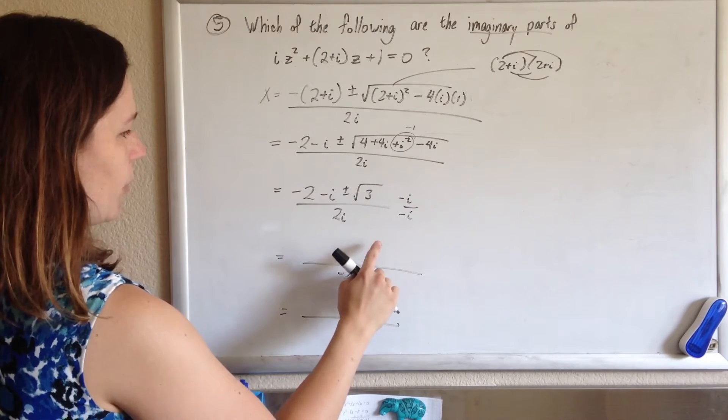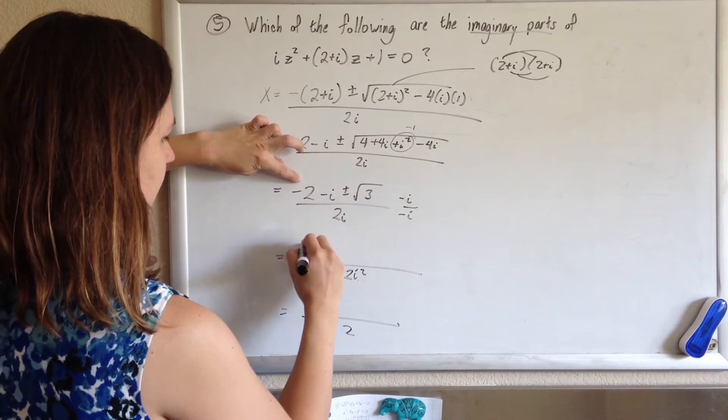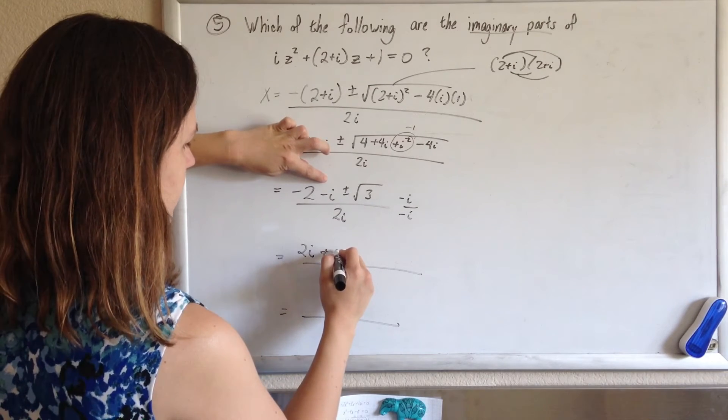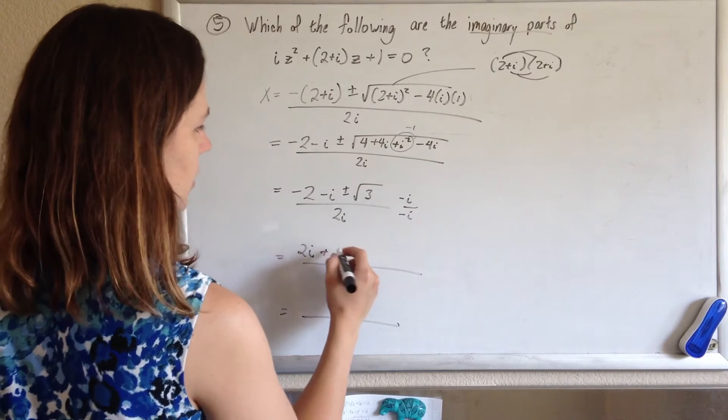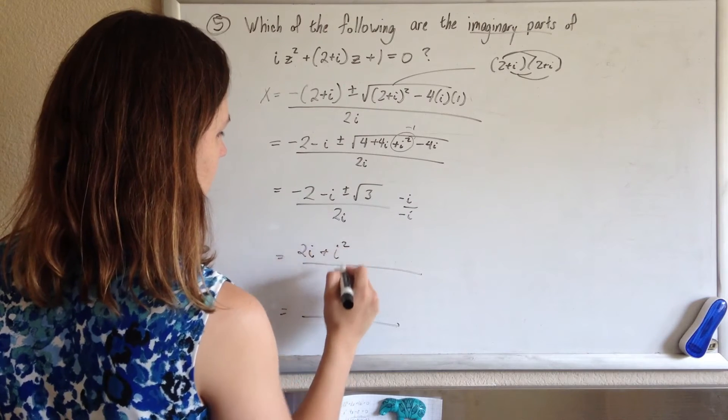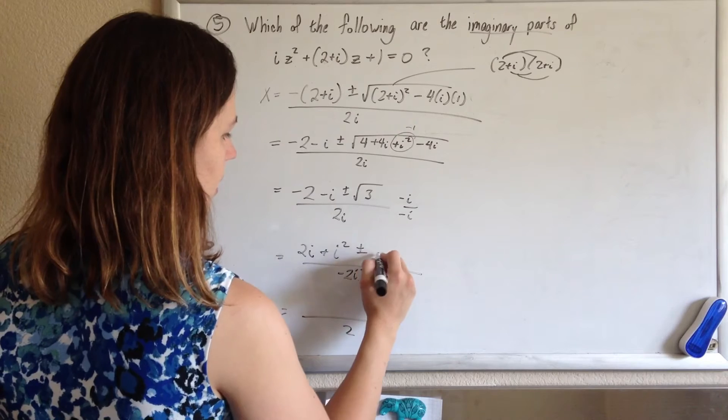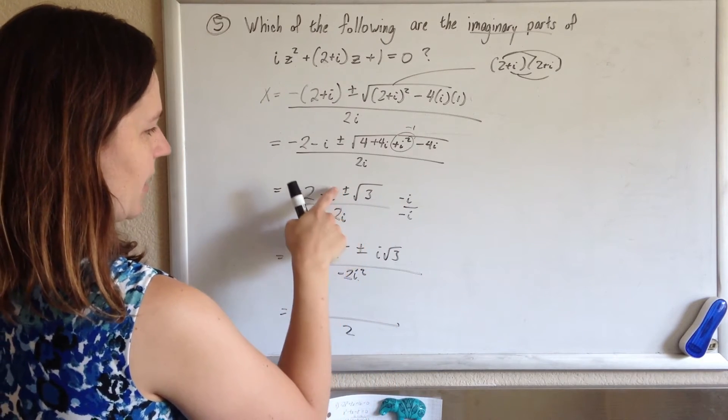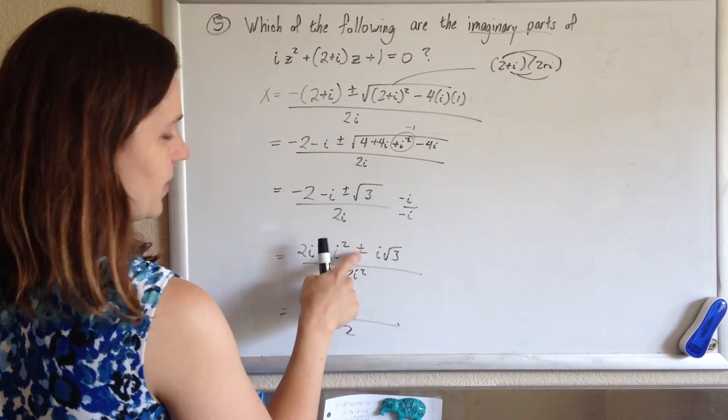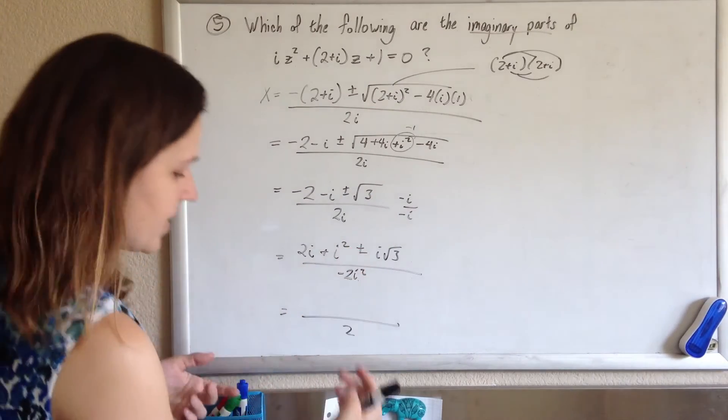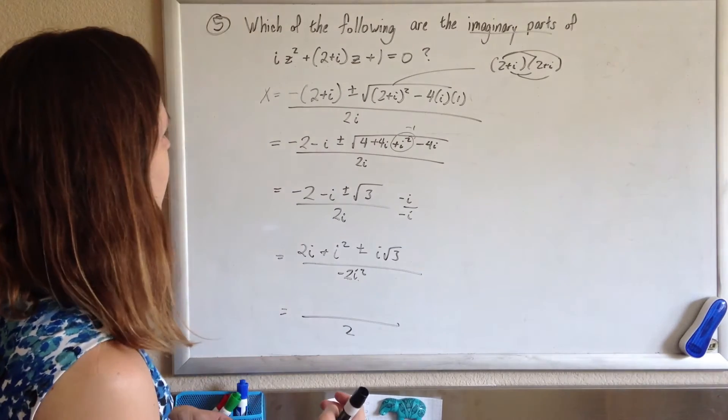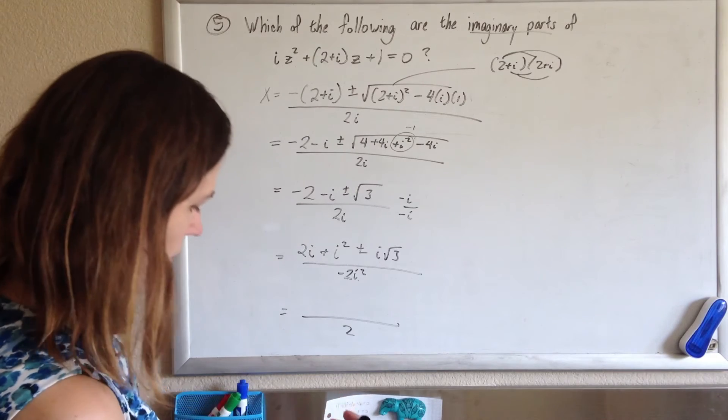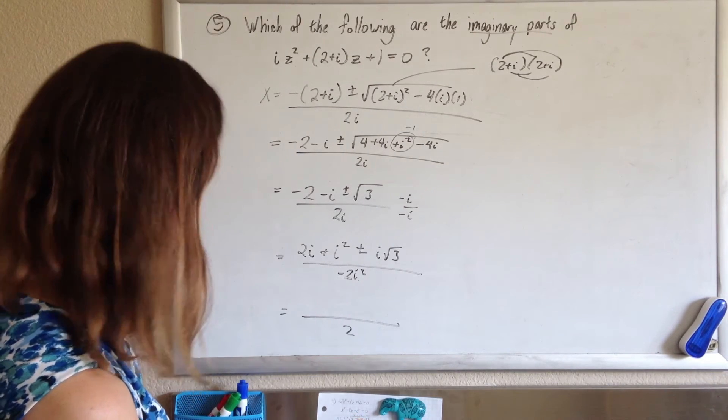So we multiply top and bottom by negative i, that fancy form of 1, so we distribute it to the top, we get positive 2i plus i squared plus or minus i root 3. When the negative goes to this plus or minus, the positive would become a negative, and the negative would become a positive, so you still have plus or minus. You don't need to change that.